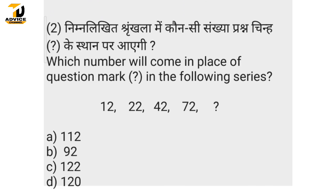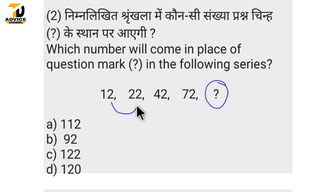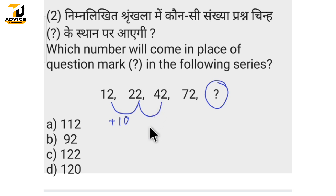The next question has a question mark. We need to find it. Looking at the first sum: the difference between 12 and 22 is 10. The difference between 22 and 42 is 20.